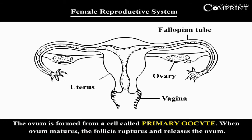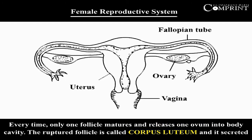The ovum is formed from a cell called the primary oocyte. When the ovum matures, the follicle ruptures and releases the ovum. Every time, only one follicle matures and releases one ovum into the body cavity.